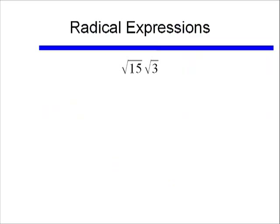If I asked you to find square root of 15 times square root of 3, well to multiply square roots, that is multiplying radicals with the same index, all we need to do is multiply those two numbers together underneath a single square root sign.